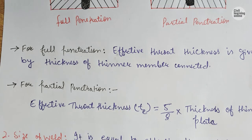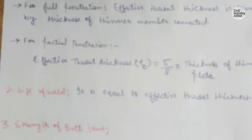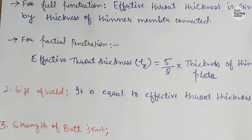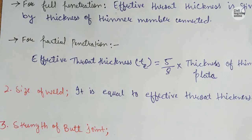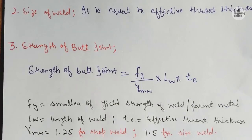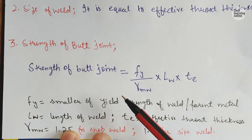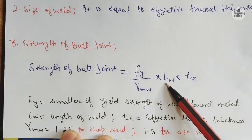The size of weld is equal to the effective throat thickness. The formula for strength of a butt joint is: Fy divided by gamma Mw, multiplied by Lw into Te. This is our design formula for the butt joint.